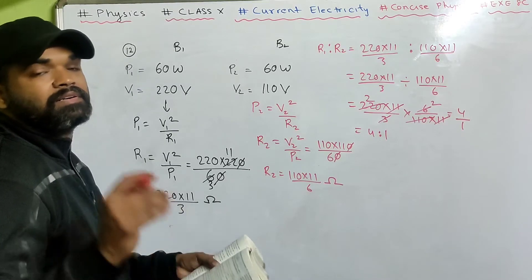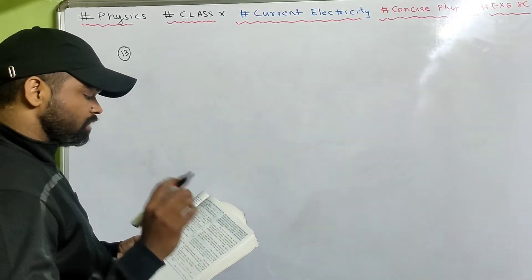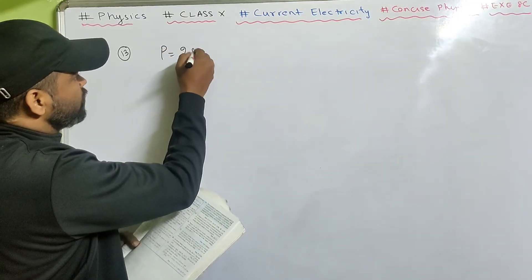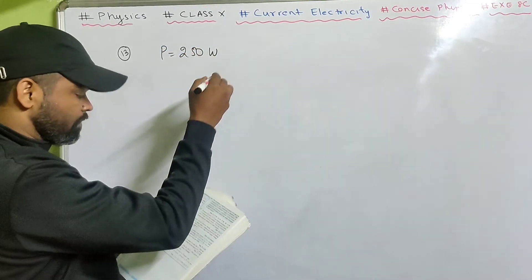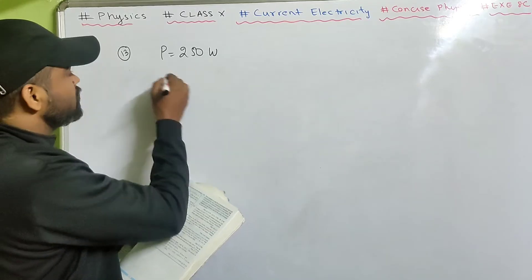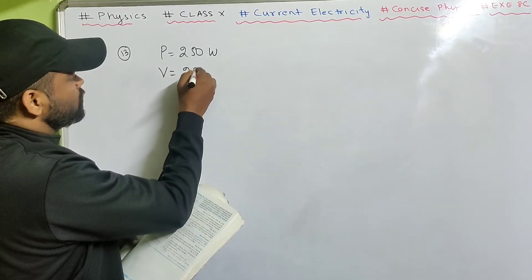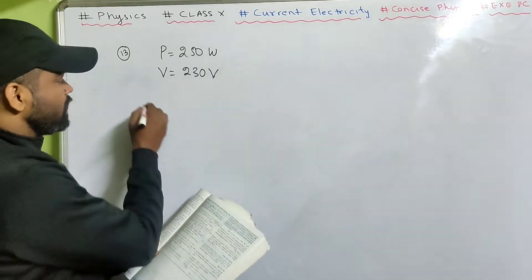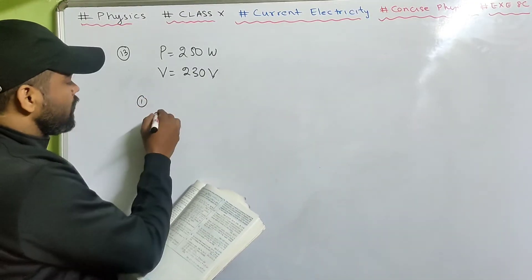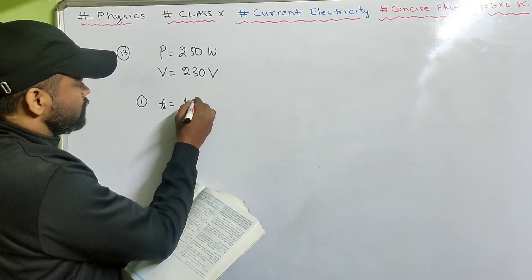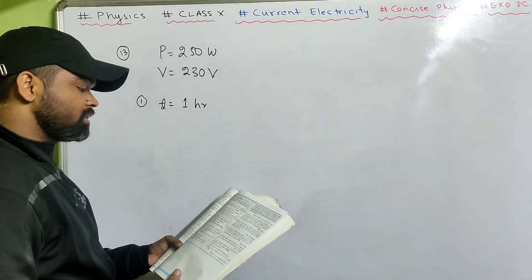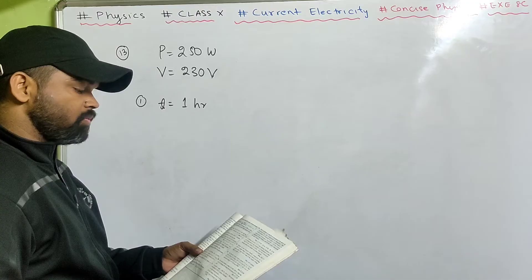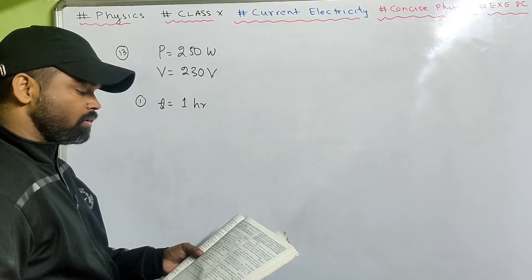Problem 13: An electric bulb is rated 250 watt and 230 volt. Calculate the energy consumed in 1 hour. Also, find the time in which the bulb will consume 1 kilowatt hour energy when connected to 230 volt mains.